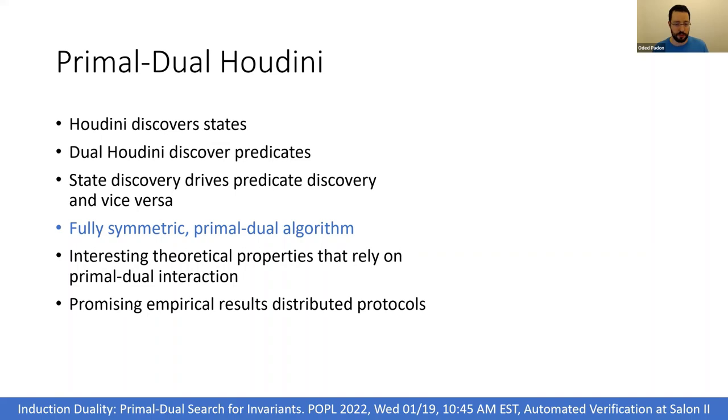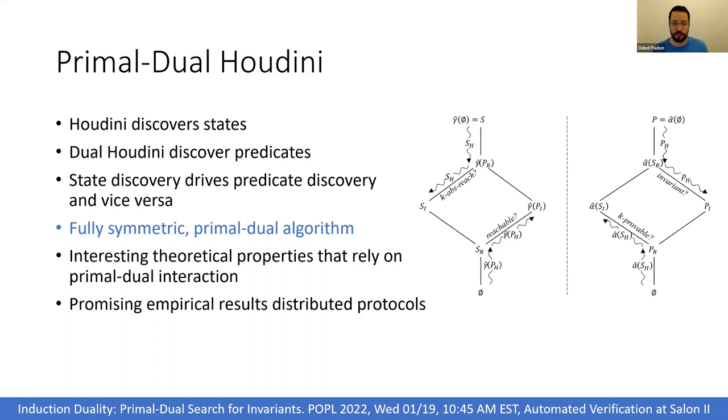To give you a teaser for the paper, I want to show you this figure that illustrates the operation of primal-dual Houdini. The left-hand side of this figure represents the lattice of sets of states and the right-hand side represents the lattice of sets of predicates. The most interesting and fun thing about this figure is that the left and right sides are symmetric in two ways.